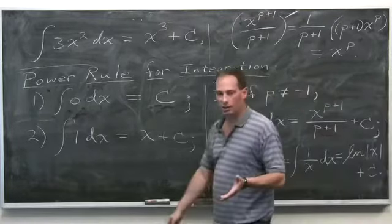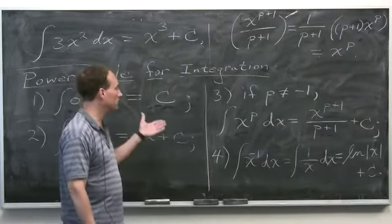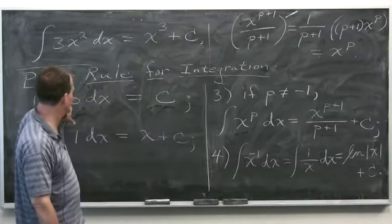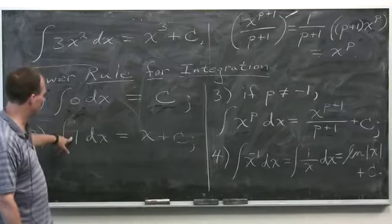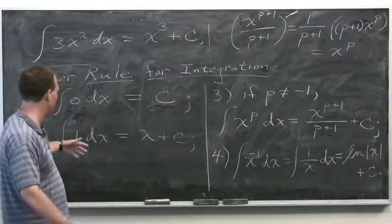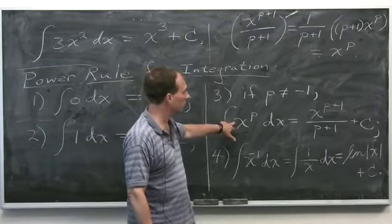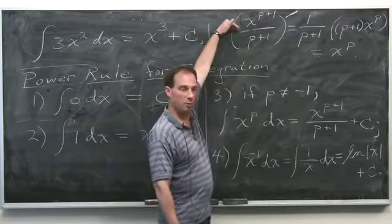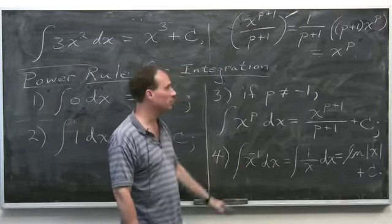So this tells you how to anti-differentiate powers of x. For all powers unequal to minus 1, you get the reverse of the normal power rule for differentiation. Then something special happens when p equals minus 1 — that's the natural log case.